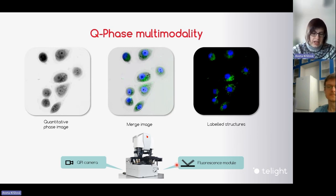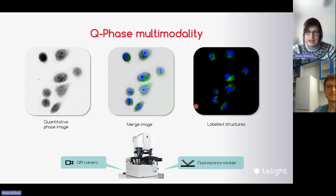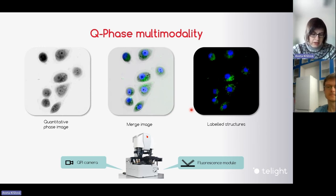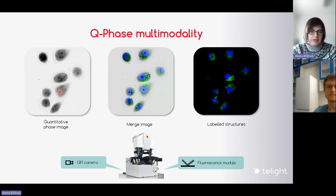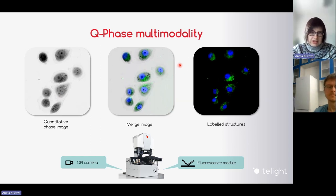The fluorescence module can really help because the quantitative phase image is not specific. Fluorescence can help to distinguish different proteins and different parts of the cells. You can then correlate between these two images — for example correlating morphological changes visible in the quantitative phase image with changes in protein localization visible in the fluorescence image.